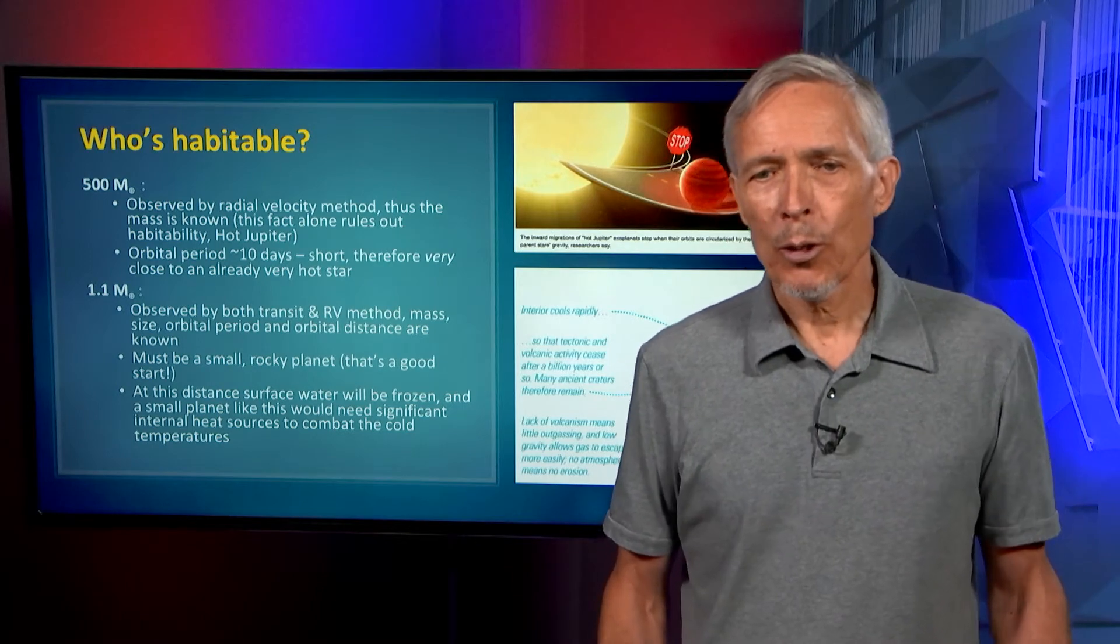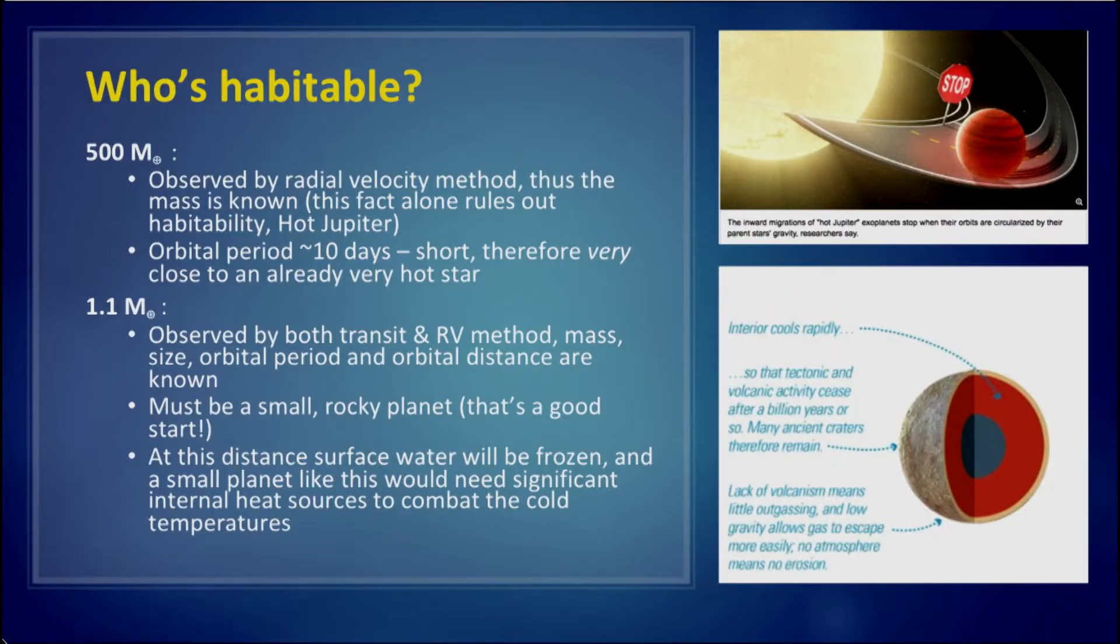Sometimes it's simple. For the super Jupiter observed by the radial velocity method, the mass is enough to rule out habitability. When planets orbit that close to the star, and the Doppler method gives the orbital period, and we know the parent star's luminosity and temperature, it's easy to calculate the temperature of a planet at a particular orbit using Kepler's laws. In this case, with an orbital period of 10 days, it's very close to an extremely hot star. So this is clearly an uninhabitable planet, and that's true for essentially all hot Jupiters found.